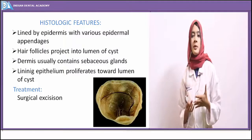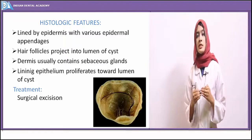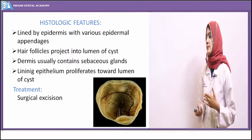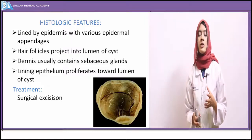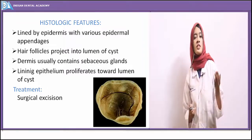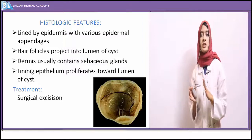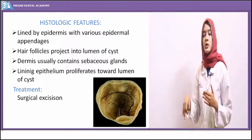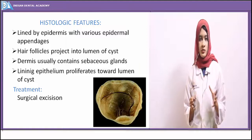Microscopically, the dermoid cyst shows presence of an epithelial lining which has epidermal appendages. There are apocrine glands, sebaceous glands, and hair follicles present. The lining epithelium shows proliferation. In the clinical picture shown, which is a cystic teratoma of the ovary, you can see hairs in the lumen of the cyst — that is a dermoid cyst. Treatment is surgical excision, and recurrence is very rare.